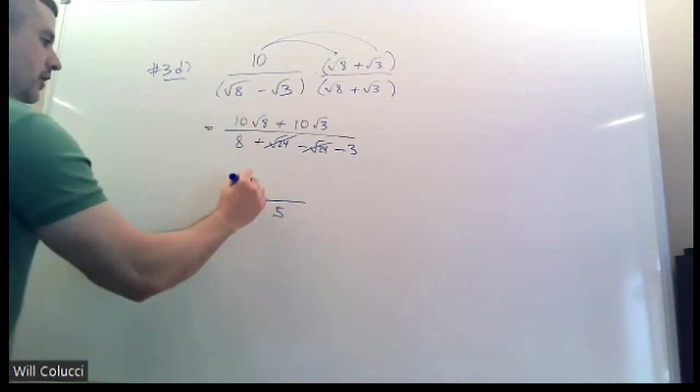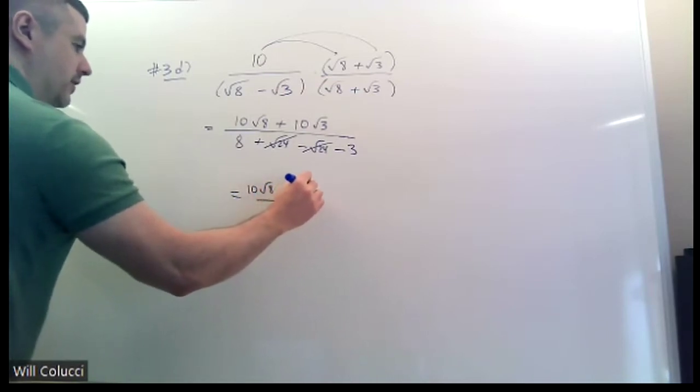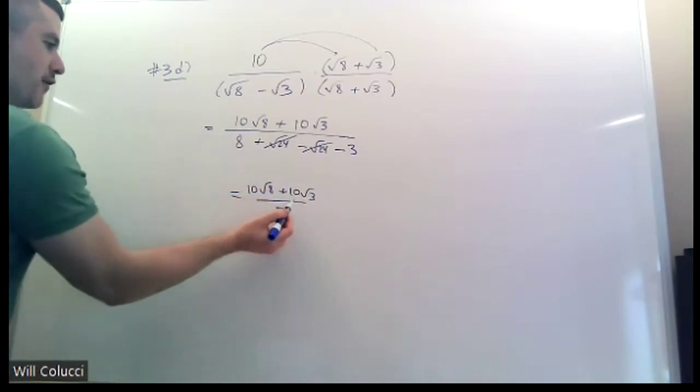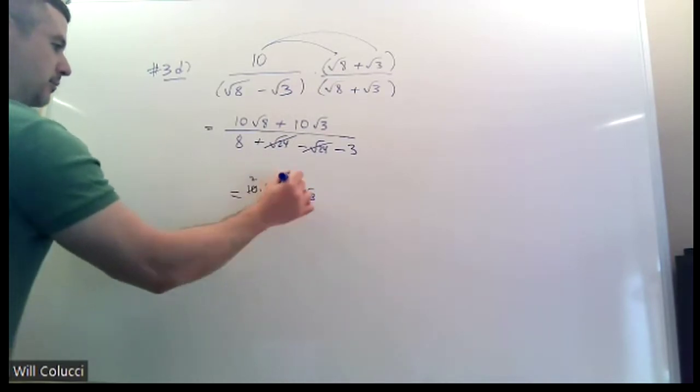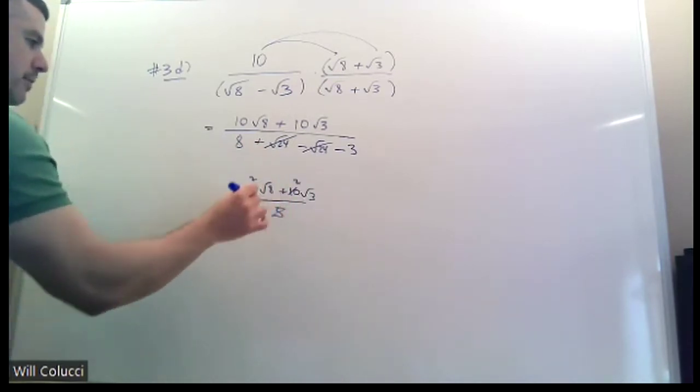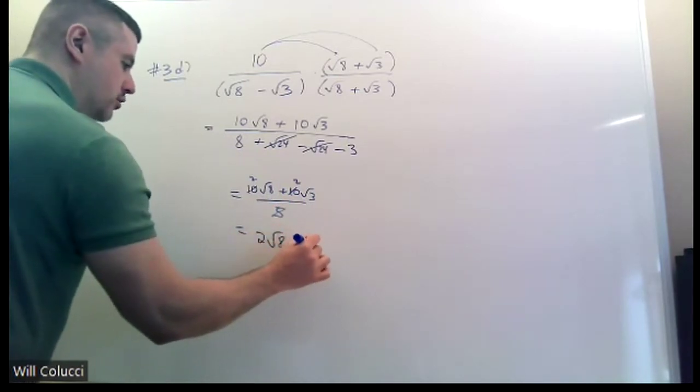Why is that good? Because I have a bunch of 10s on top. So that's the whole point of this. You're going to divide everybody by 5. He's gone. He's gone. He's gone. That becomes a 2. That becomes a 2. You divide everybody by 5. So you get 2 radical 8 plus 2 radical 3.